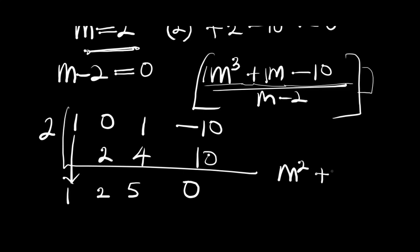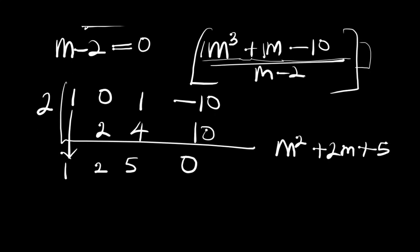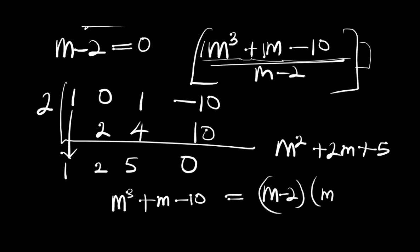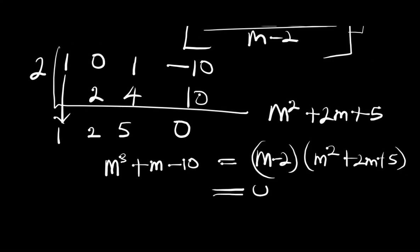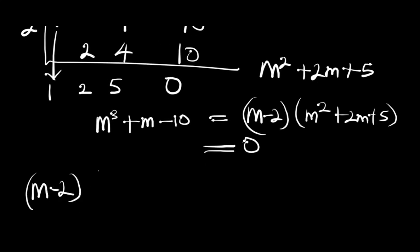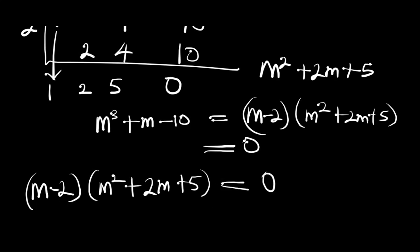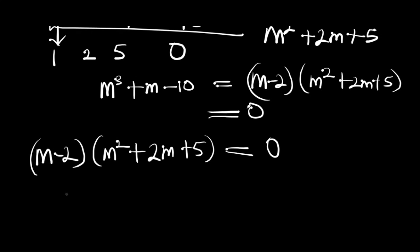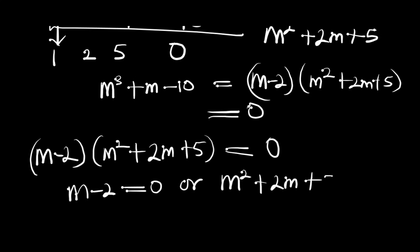So dividing the two polynomials gives m^2 + 2m + 5. That means we can write m^3 + m - 10 = (m - 2)(m^2 + 2m + 5) = 0. Setting each factor to zero: m - 2 = 0, or m^2 + 2m + 5 = 0.